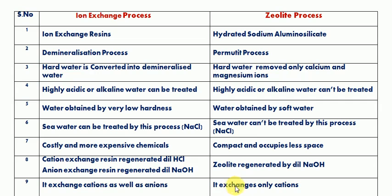In the zeolite process, only cations — mainly calcium and magnesium — are exchanged. The remaining anions such as bicarbonates, carbonates, chlorates, and sulfates remain in the water in the form of sodium salts of their respective acids.